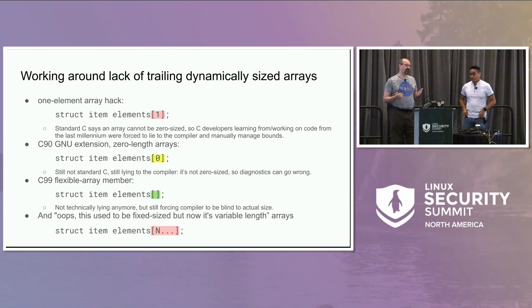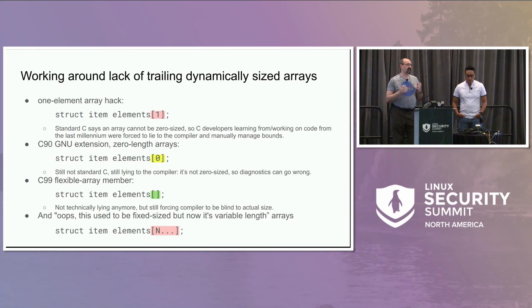But this also had problems because you're still lying to the compiler — you said you have a size-zero array, and really you don't. So in 1999, C99 introduced an official flexible array member with empty brackets. At least you're not lying to the compiler directly anymore, but you still have no idea how big the array is.